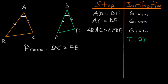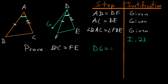To start this proof we want to use Book 1, Proposition 23, which says we can construct a duplicate angle from one that we're given. We want to duplicate angle BAC at point D using line DE. We label this new point G, and we also want to make DG equal to side AB, which we can do using Book 1, Proposition 3.